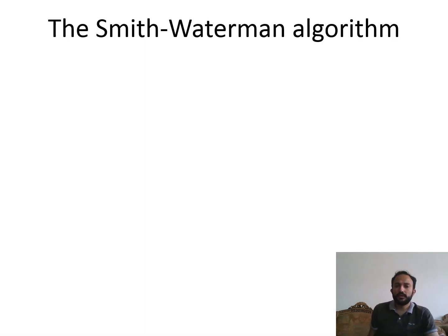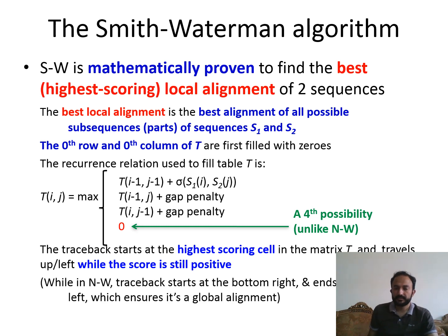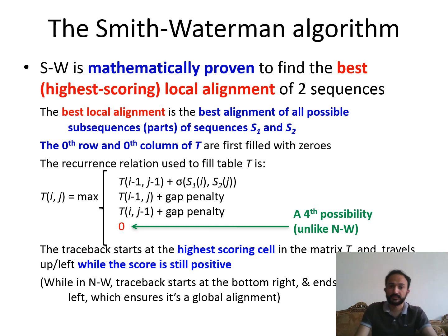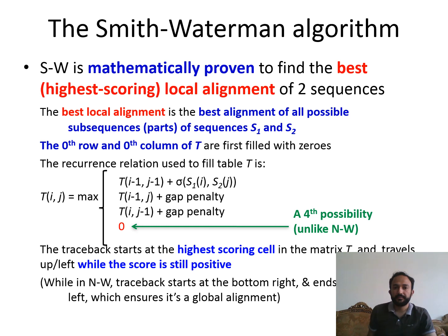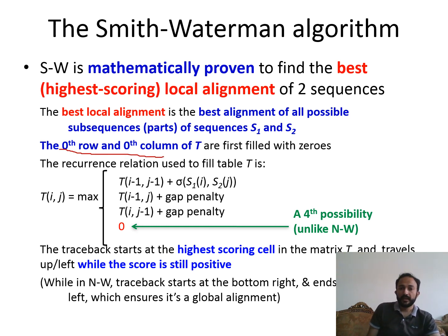Here is the overall summary of the Smith-Waterman algorithm. What Smith-Waterman does is identify the highest-scoring set of sequences with the best alignment between two sequences. The best local alignment is the best alignment of all possible subsequences of S1 and S2, so there can be more than one alignment — the best stretches of matches. When building the matrix, after making the n plus one by m plus one rows and columns, we add zero in both the first row and first column.